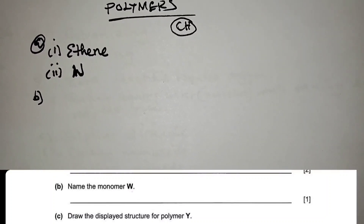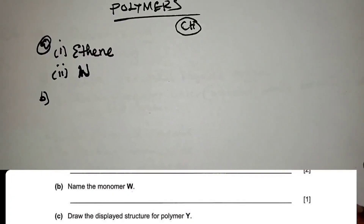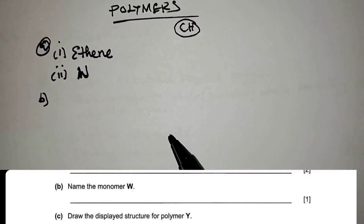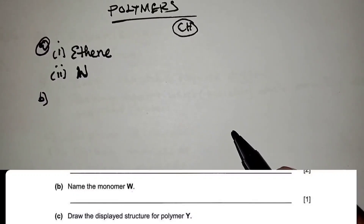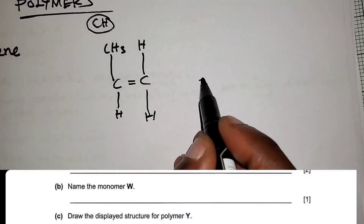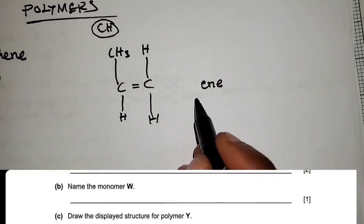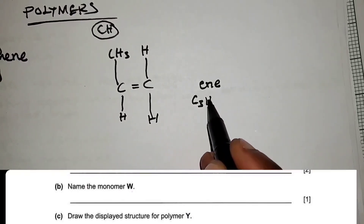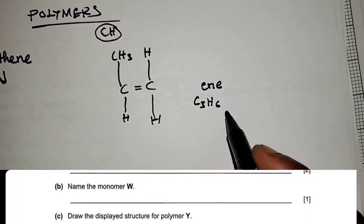Question b: name the monomer W. Remember that these are addition polymers, and we always use alkenes or unsaturated hydrocarbons. Look at the structure — there is a double bond, so the name ends in '-ene'. Count the carbon atoms: there are three carbon atoms and six hydrogen atoms, giving C3H6. This is propene.